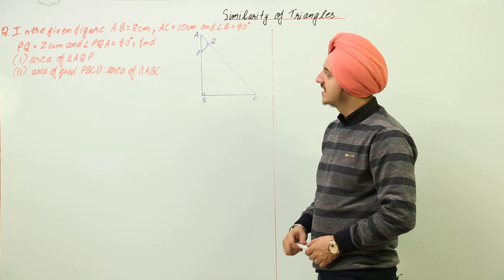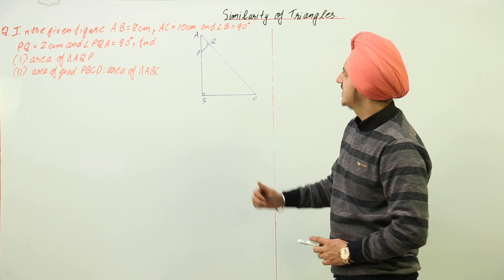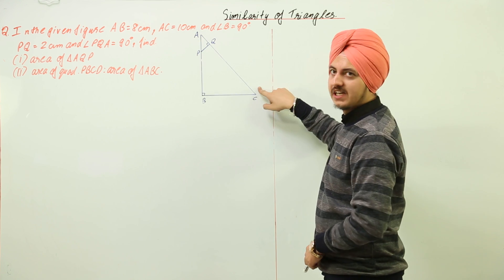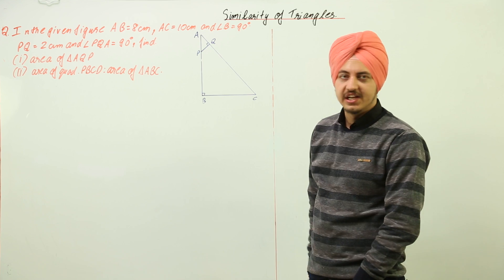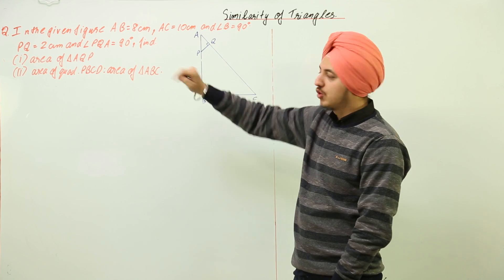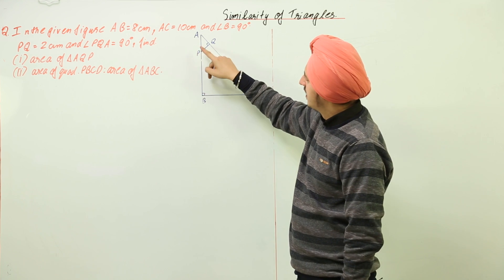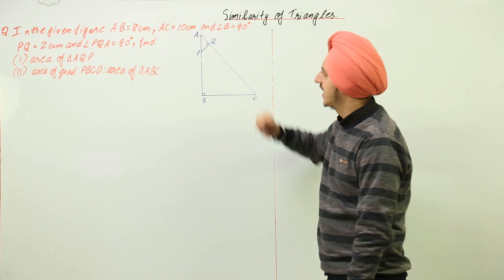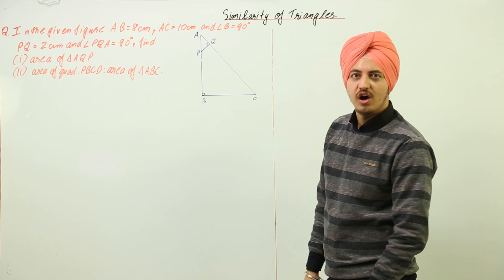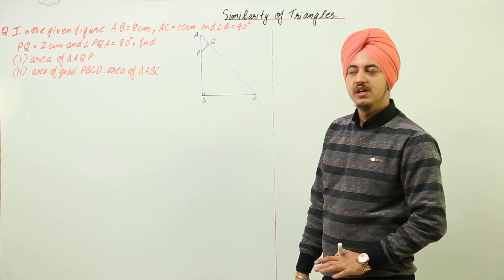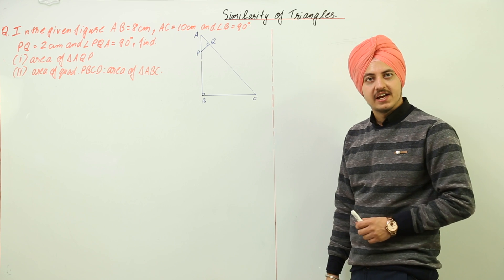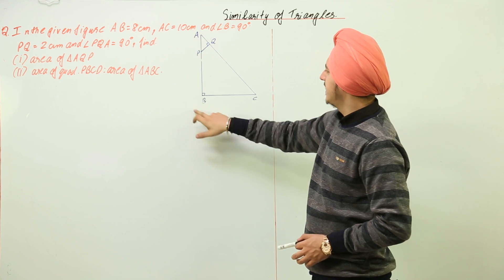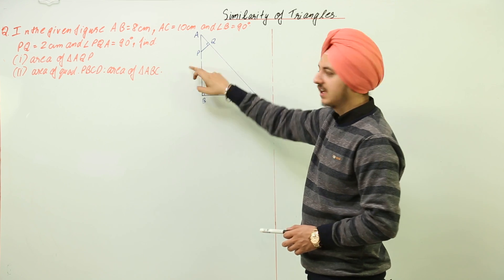The question states: AB is equal to 8 centimeters, AC is equal to 10 centimeters, angle B is equal to 90 degrees, PQ is 2 centimeters, and angle PQA is equal to 90 degrees. We need to find the area of triangle AQP. We start by proving that triangle ABC is similar to triangle APQ.